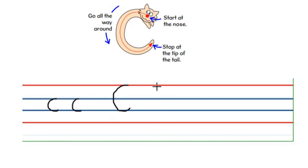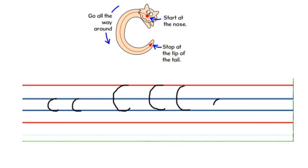Come, let's write together. Capital C — start from the skyline, go round and come and touch the grass line. Again, write along with me: start from the skyline, go round and touch the grass line. You have written the capital C. Now can you write the little C? Little C is the same shape but fits between the middle area, between the two blue lines. Start from the aeroplane line, go round and touch the grass line. We have written the letter C.